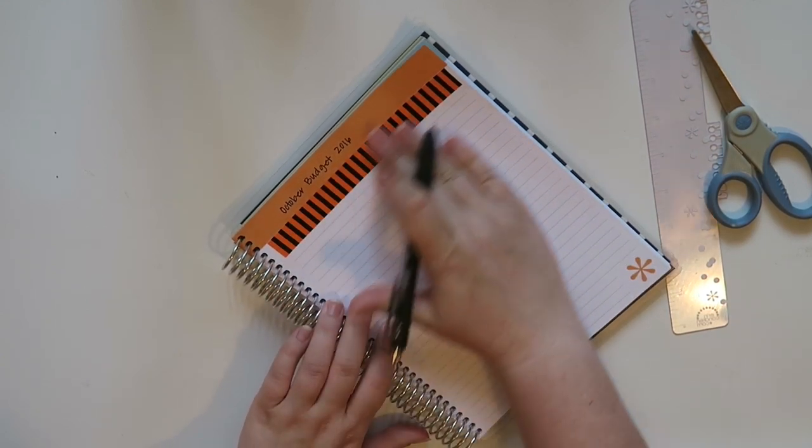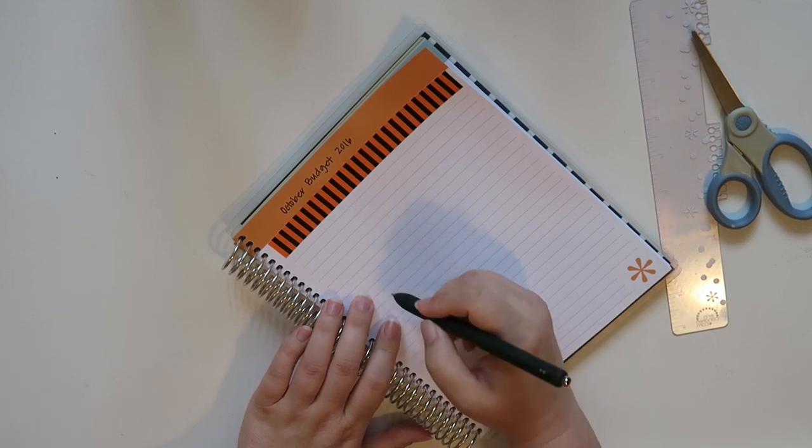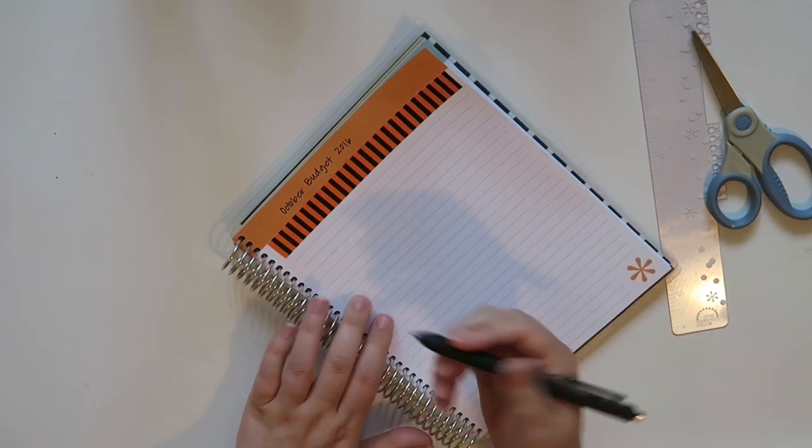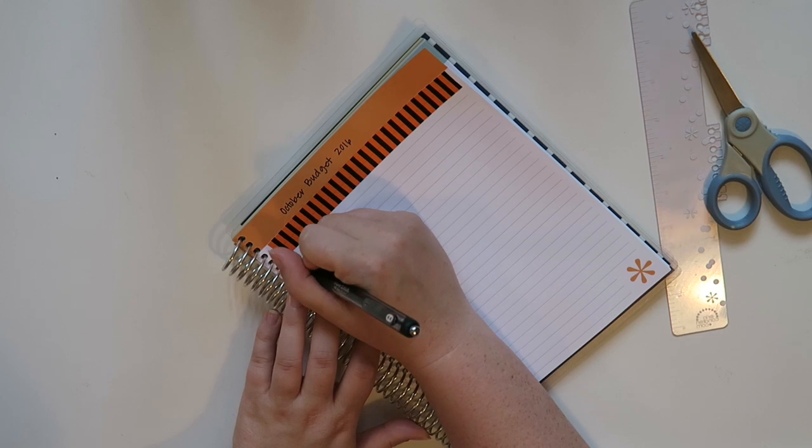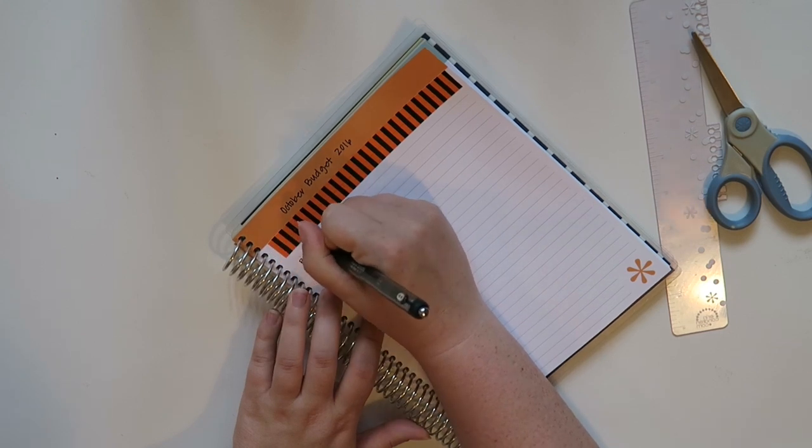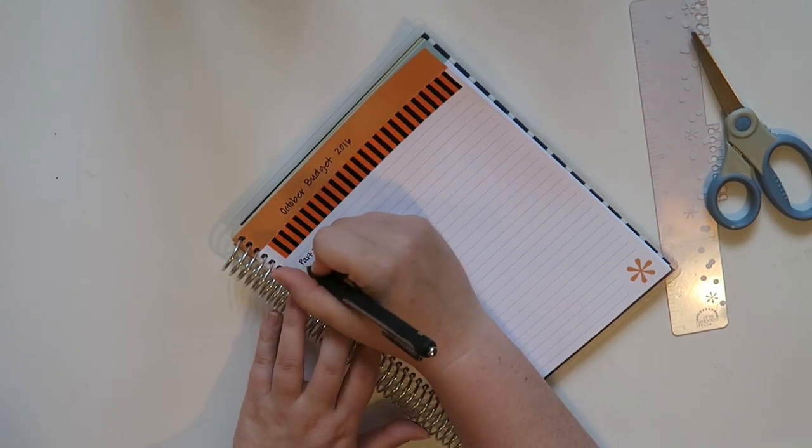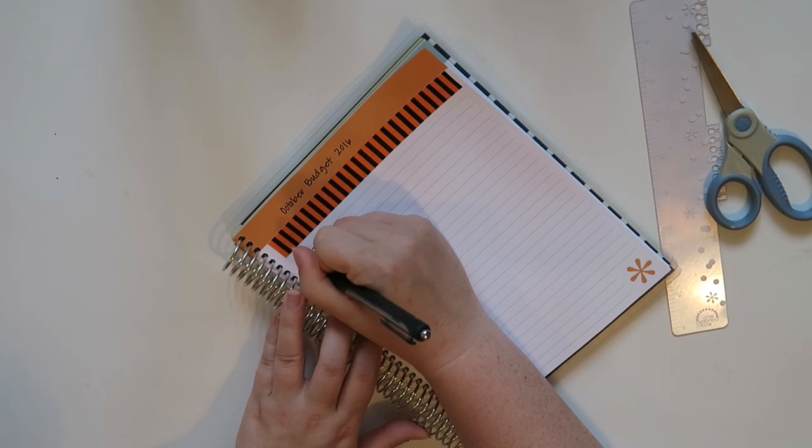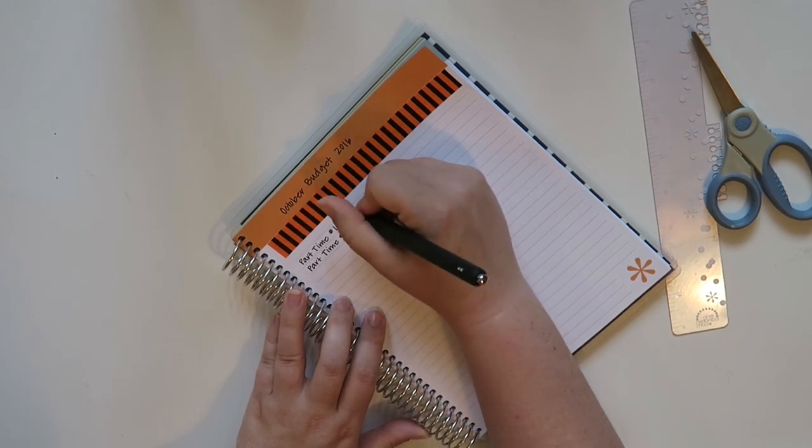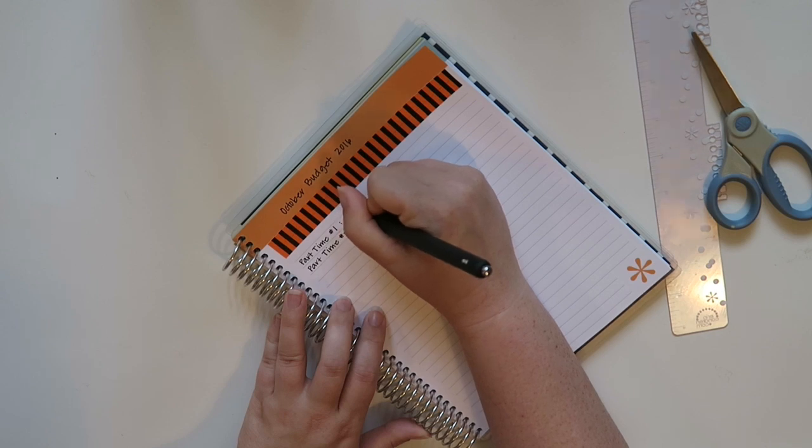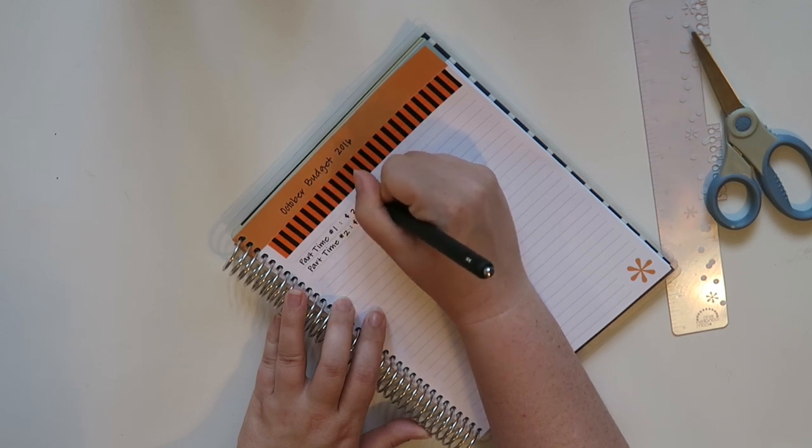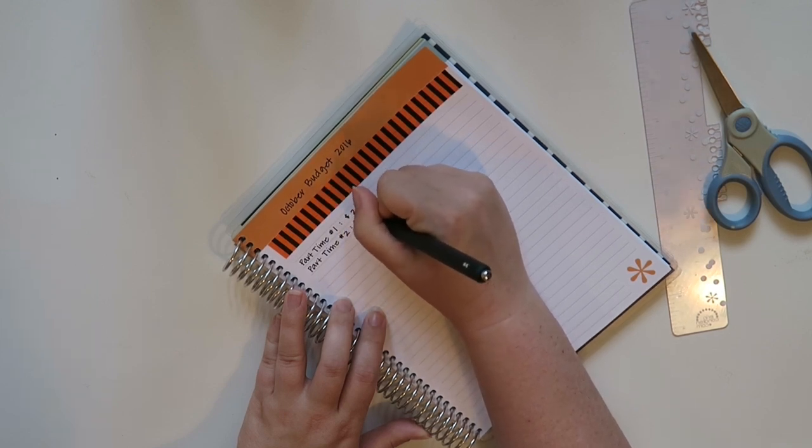So at the top as usual, I'm going to put in what I know is coming in and then I'm going to write out like my list of bills. So I'm just going to write part-time and I get paid twice in the month of October from the part-time job. And I think they're going to be about the same. I think they're going to be both at around like the $200 mark.